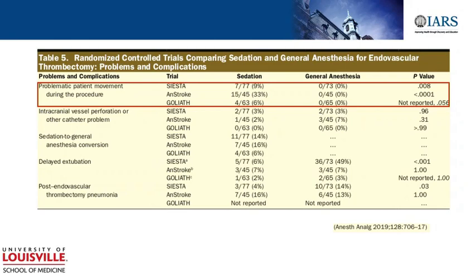As expected, there is no patient movement or restlessness under general anesthesia. Under sedation, we're seeing about 6 to 33% increased patient movement, which translates into a conversion rate of approximately 10% from sedation to general anesthesia, the majority of these conversions being due to agitation and restlessness.